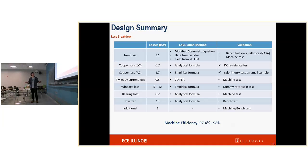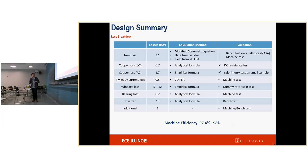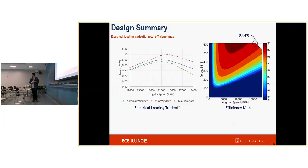Here's the loss breakdown. So far we've done copper loss calculations, and we validated those via bench tests. The other losses we're going to be validating in the near future. As of now, with a given range of windage losses, our machine efficiency ranges from 97.4% to 98%. The chart on the left shows how we ended up with 15,000 RPM.